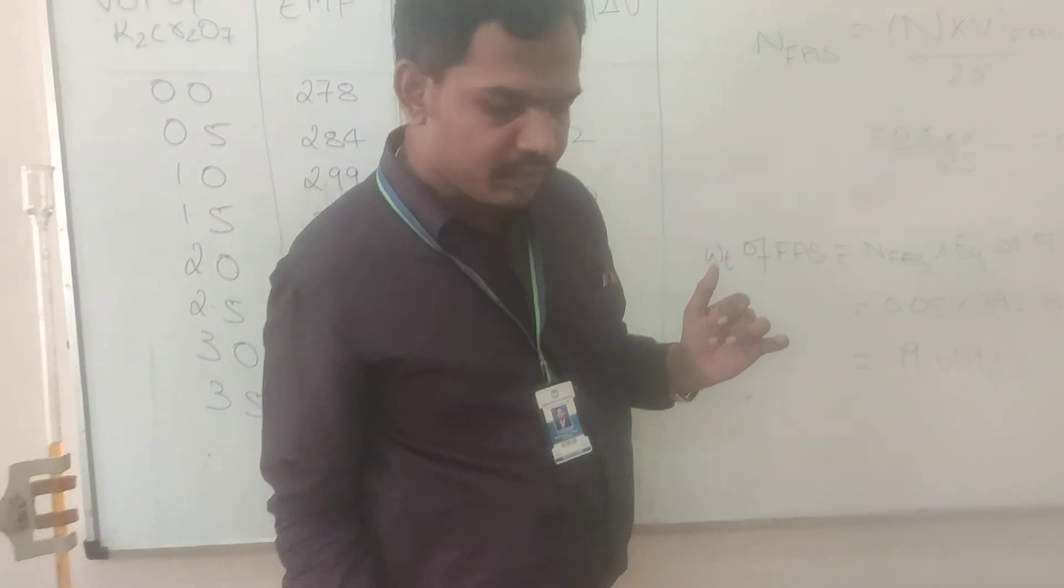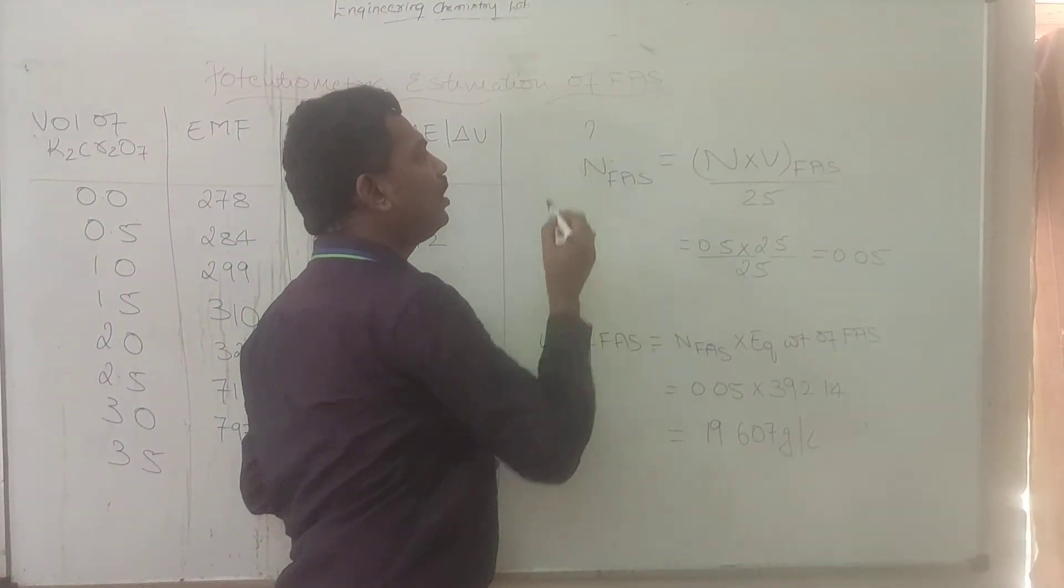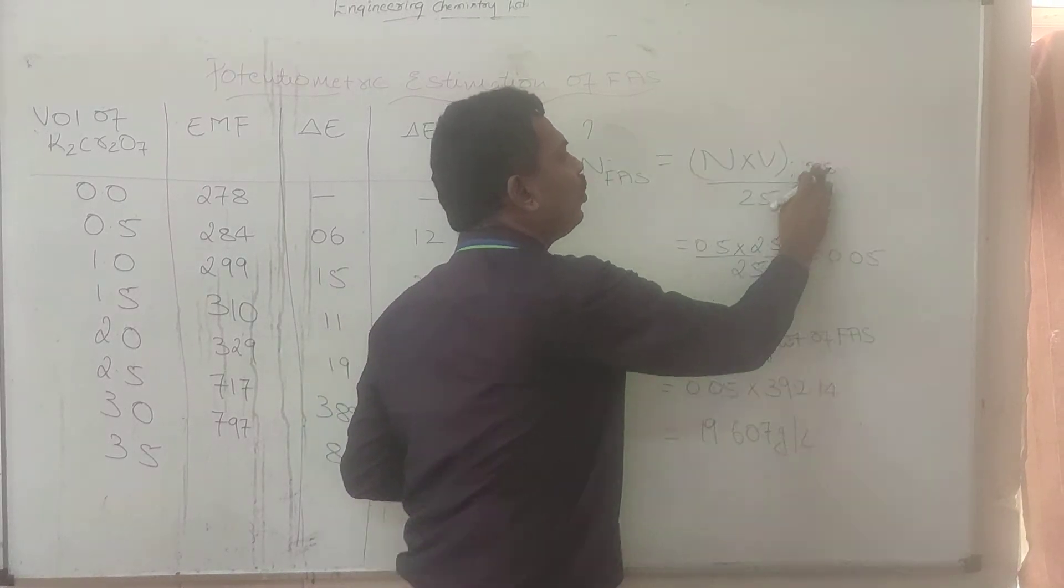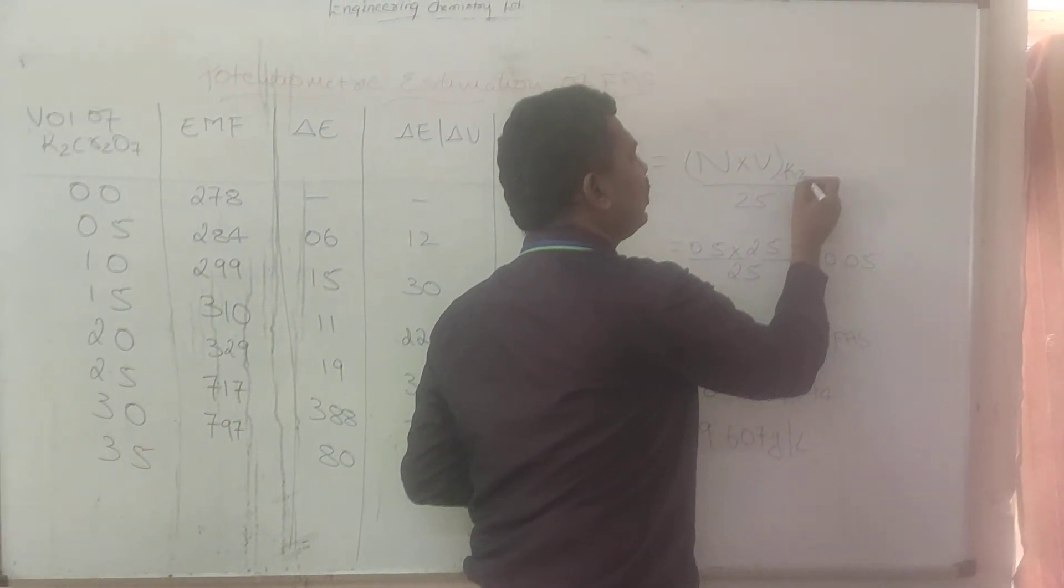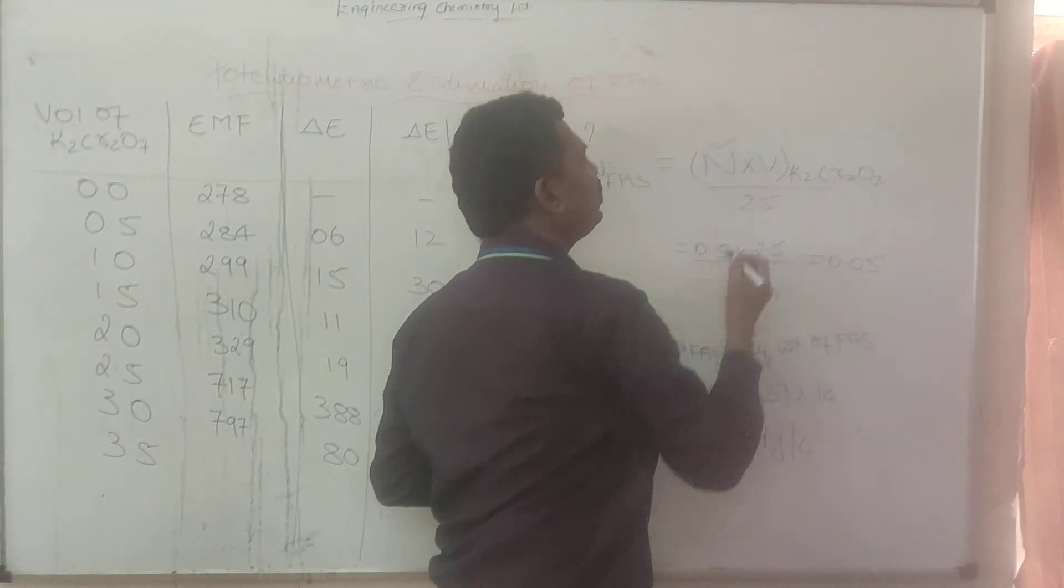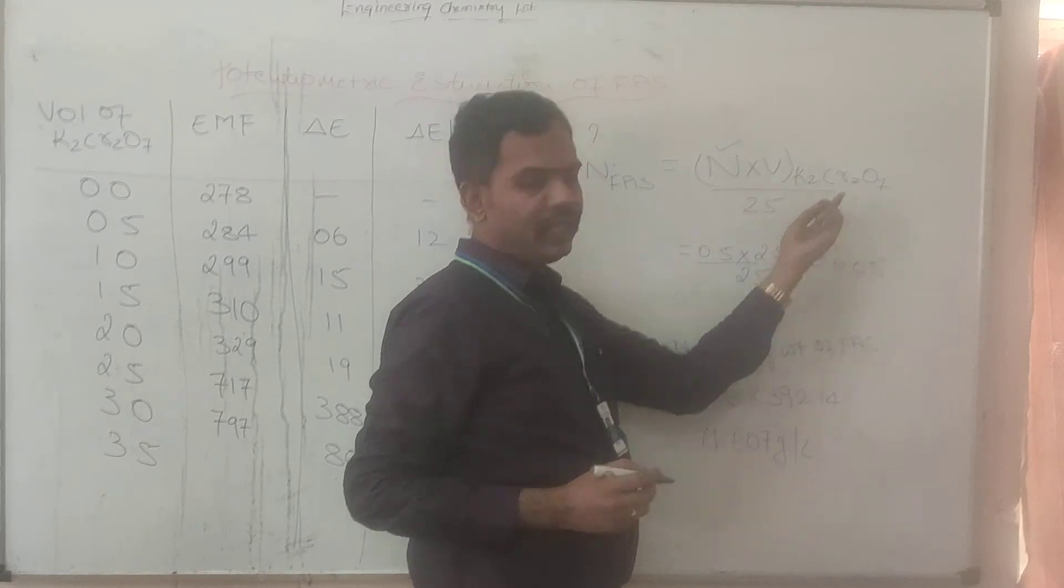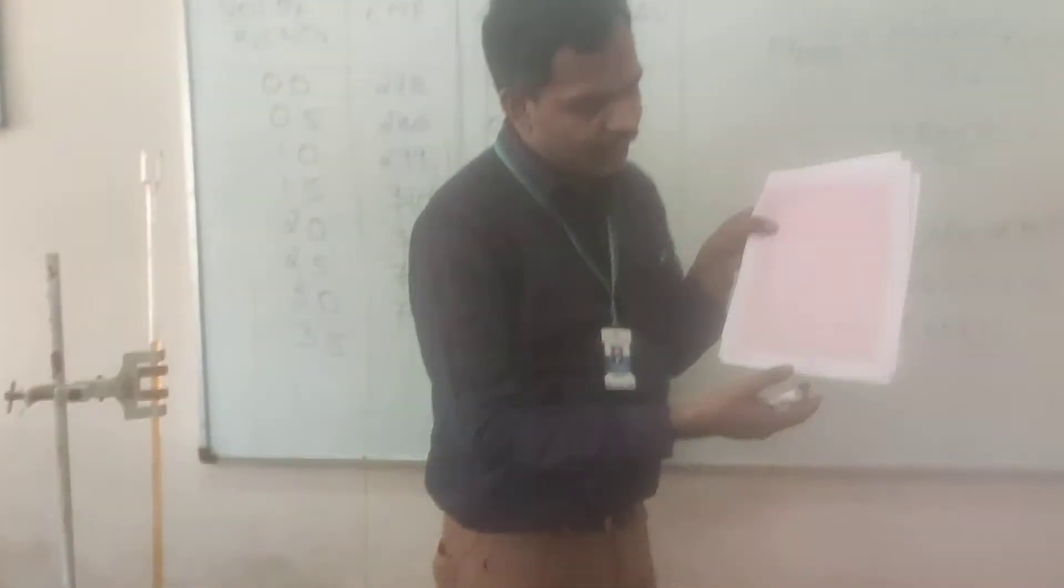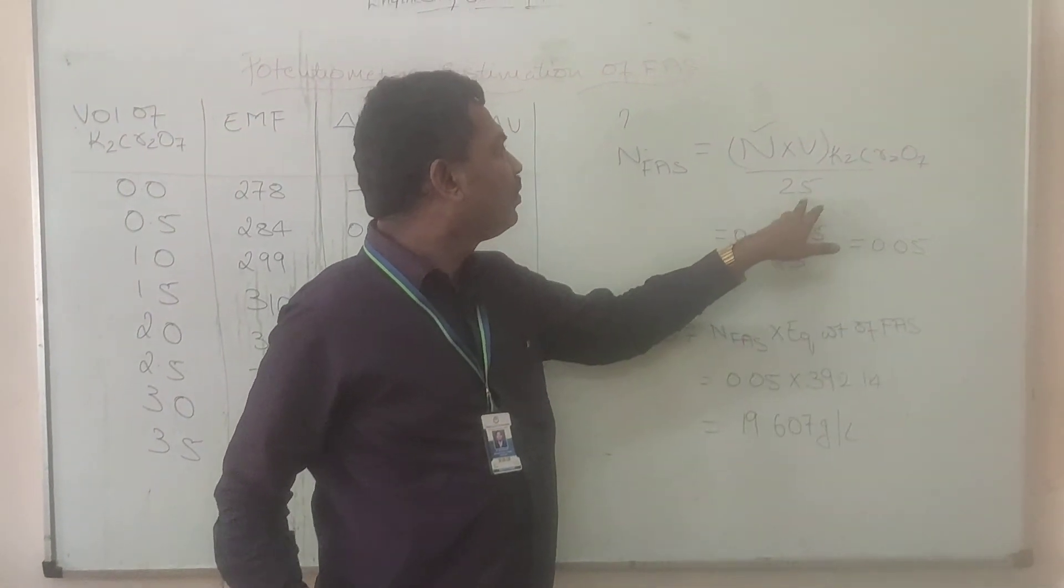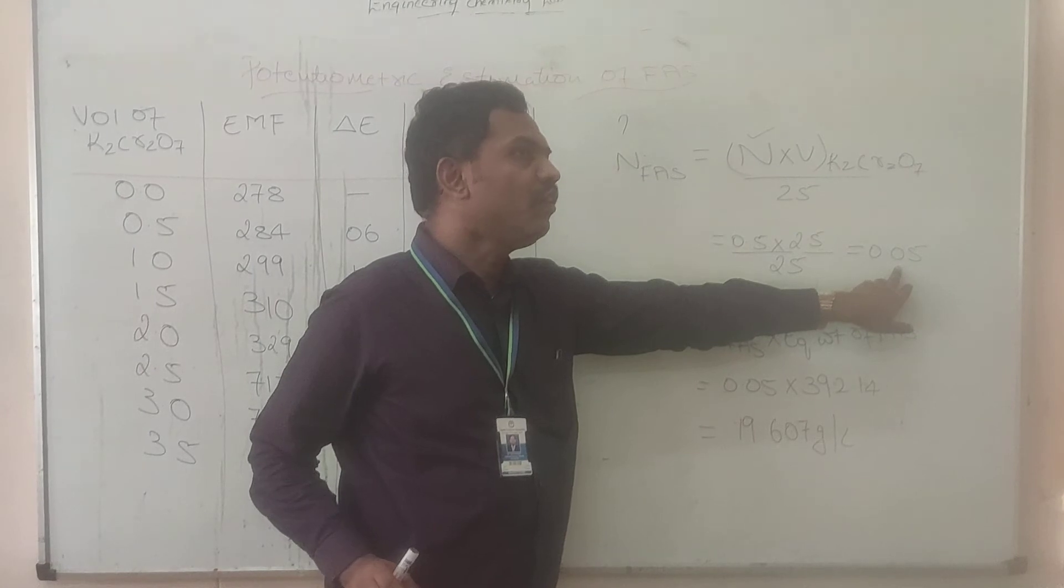So, the calculation here is, so, we want normality of FAS. We are supposed to find out. So, normality of FAS equals normality times volume of K₂Cr₂O₇. So, normality of K₂Cr₂O₇ is 0.5 given. Volume of K₂Cr₂O₇, we will take it from graph. From graph it is 2.5. So, divided by volume of FAS is 25 ml. So, normality of FAS is 0.05.